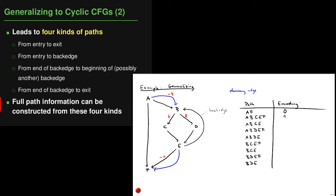The path abce is the second kind — going from entry a to the beginning of a back edge e — and has encoding 2, because we start with −4 then add +6. In a similar way you can compute the encodings for each of the nine paths; I invite you to try it yourself to confirm that each path gets a unique encoding, as listed in the table.